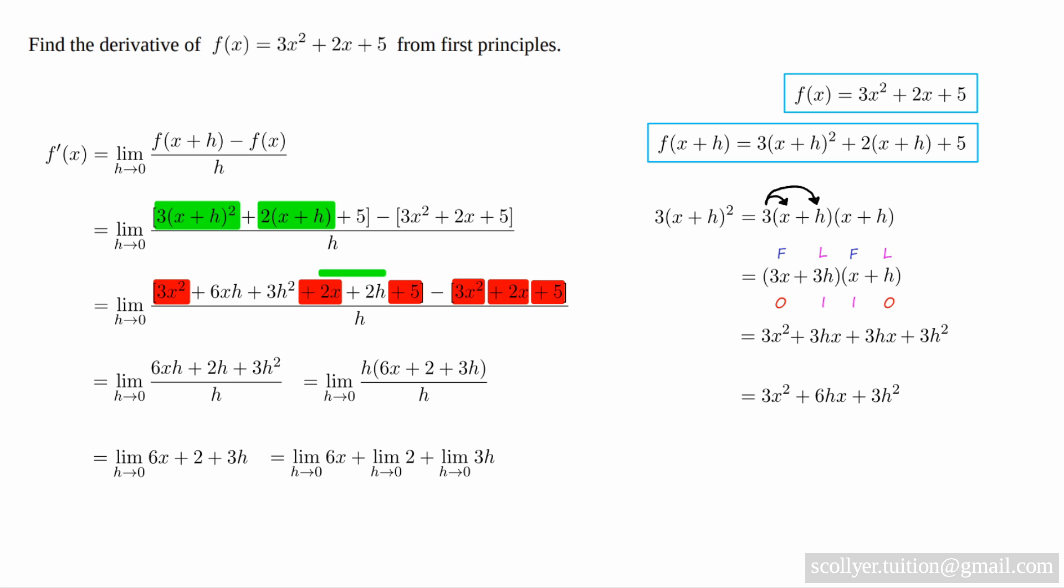Now we note that the limit as h tends to zero of 6x is 6x, because 6x does not vary with h. The limit as h tends to zero of 2 is 2, for the same reason. In addition, the limit as h tends to zero of 3h is 0. And so we obtain finally 6x + 2.